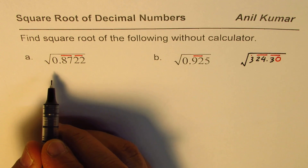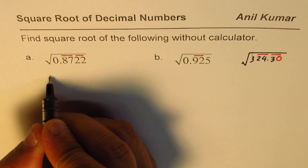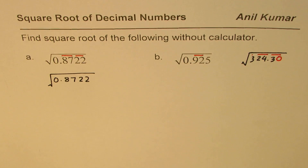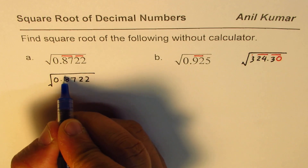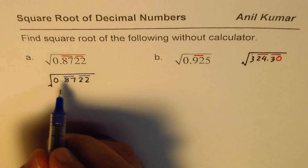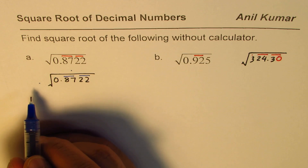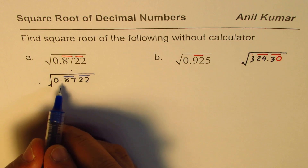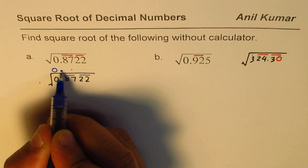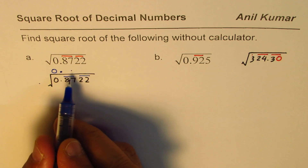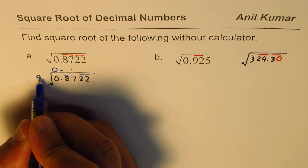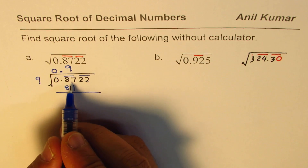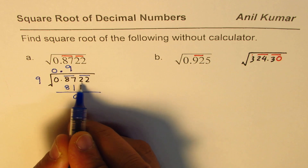Now let's see the long division process specially adopted to find square roots. We have square root of 0.8722 to be calculated. We've grouped it into sets of two away from the decimal — the first group is 87, the second group is 22. We need to find a number to place so that the product is less than 87. Since we have a number after the decimal, we place a decimal in the quotient. Nine times nine is 81, so we write 9 here. The difference is 87 minus 81 equals 6, then bring down the next group: 622.